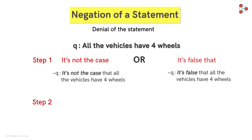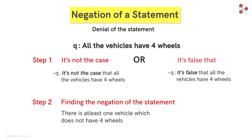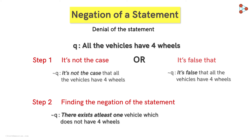Now we come to the second step — finding the negation of the statement. What do these two statements imply? It means that there is at least one vehicle which does not have four wheels. So the correct way of writing the negation of such statements is: There exists at least one vehicle which does not have four wheels. This is the negation of this statement.